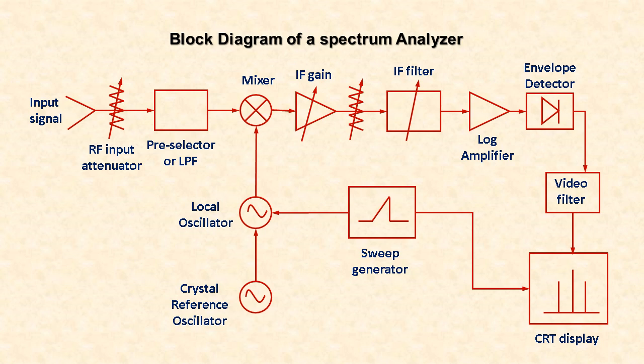Since the signals are displayed on a logarithmic amplitude scale, they are passed through a log amplifier. The envelope detector converts the intermediate frequency signal to a baseband or video signal and deflects the CRT beam on the Y-axis. The video filter is used to smooth the trace seen on the screen. The sweep generator tunes the local oscillator and also deflects the CRT beam horizontally across the screen. Let us see about each block in detail.